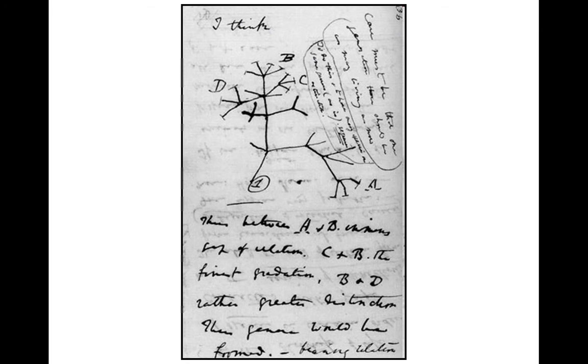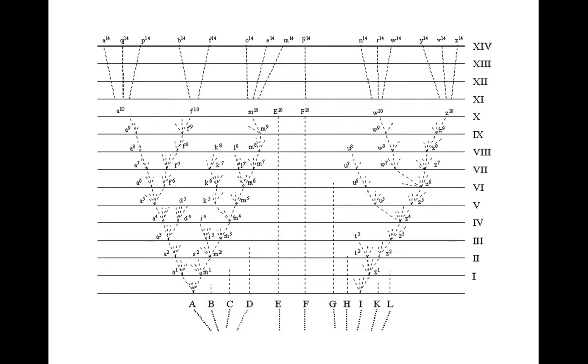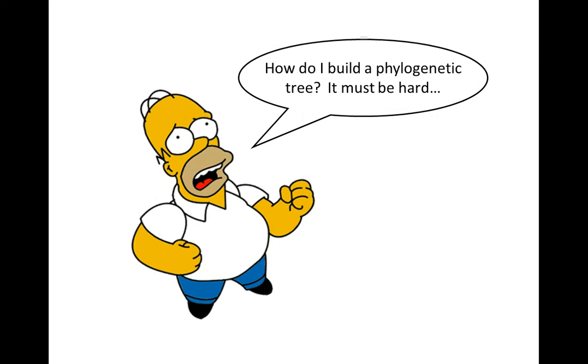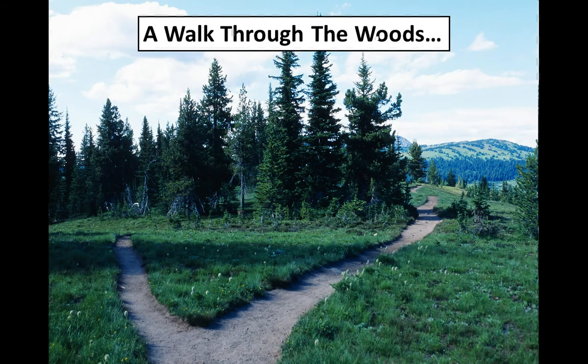This is right out of Darwin's book. When Darwin started thinking about evolution by natural selection, he started thinking, and he even says, I think that this is what happens. We have a common ancestor. It branches. Now, his branches have three branches. We now know we can't do that. But Darwin thought of this. And even before DNA, Darwin kind of started thinking this is maybe what was going to happen. So, Homer says, if I'm going to build one of these, it must be hard. Well, think of it like a walk through the woods.